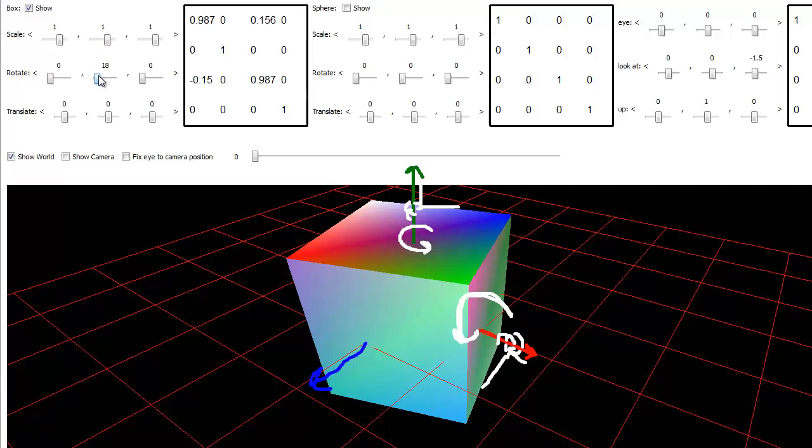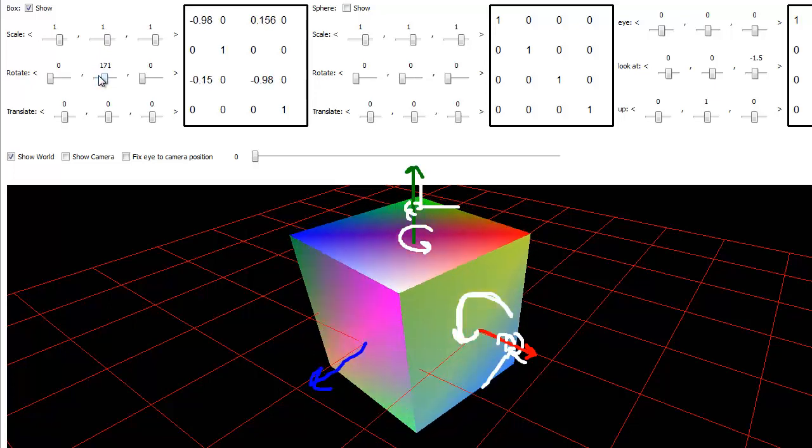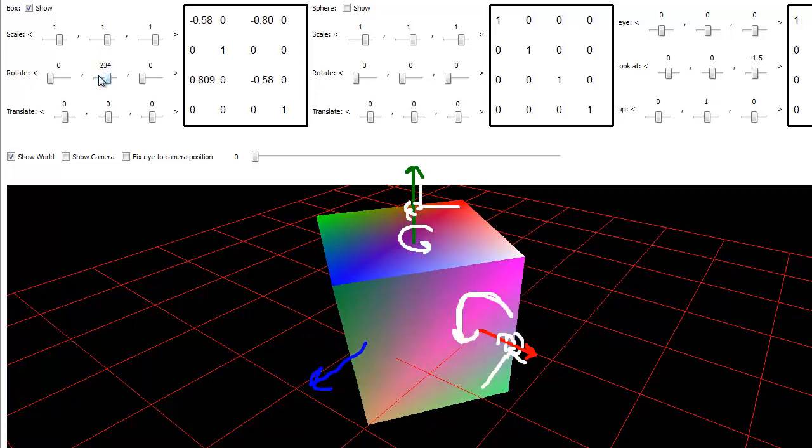So here we go. Positive rotation around the y-axis. Sure enough, the cube is rotating in the same direction as I said it would when I grabbed that basis vector with my right hand.